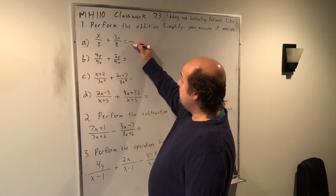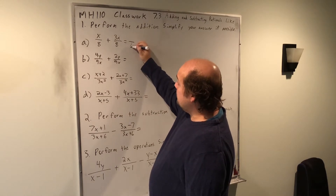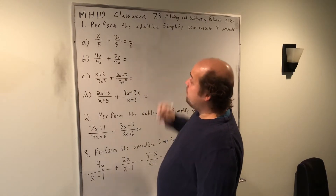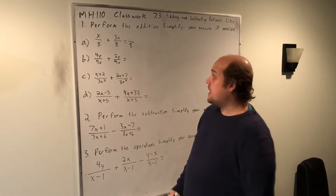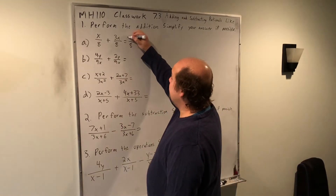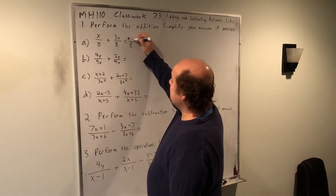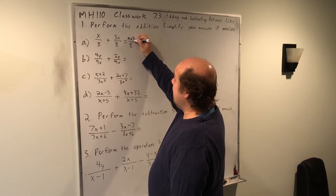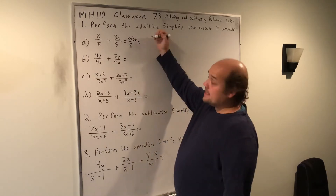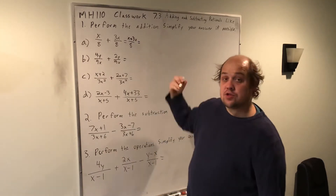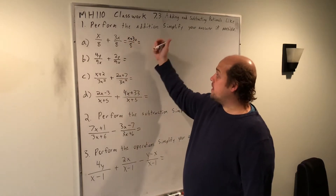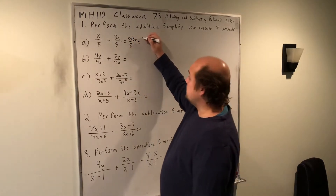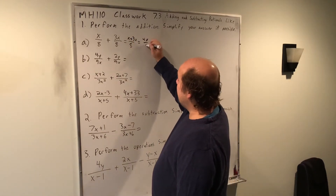Here in part A, when they both have a bottom of eight, the answer is going to have a bottom of eight. Then we combine what's on top. What's on top in the first one is an X, and we're going to combine that by adding it to a 3X. When we combine X and 3X those are like terms — this is an understood 1X — so 1X plus 3X gives me a total of 4X.